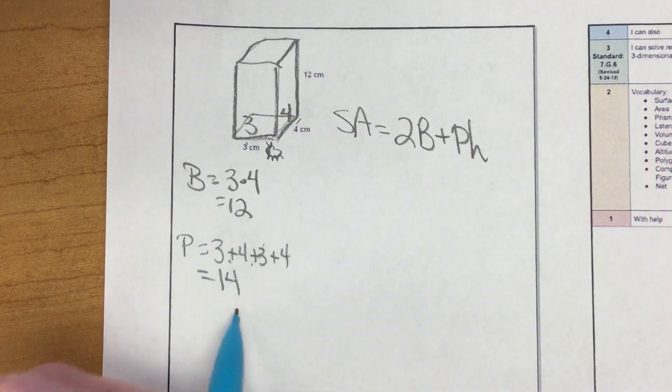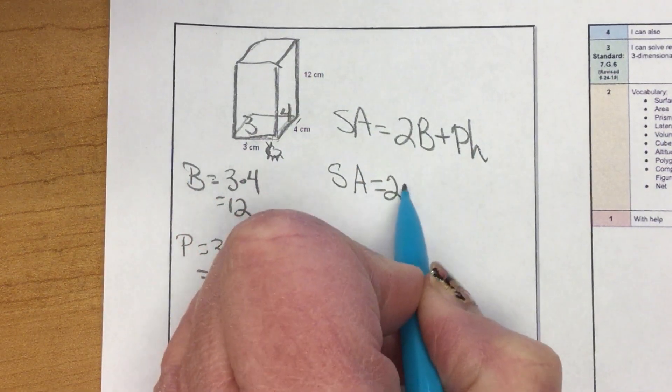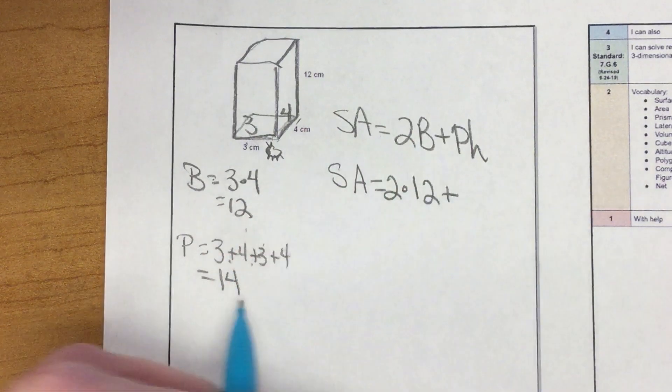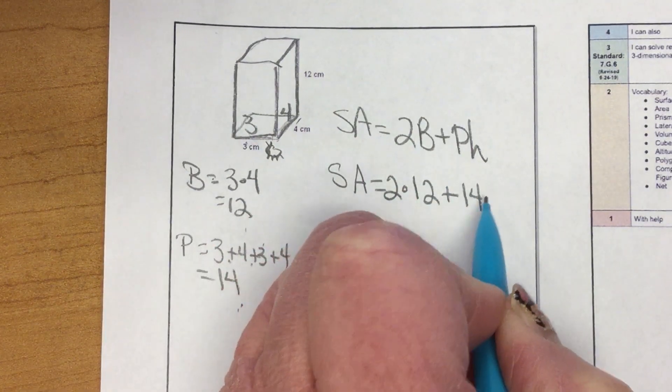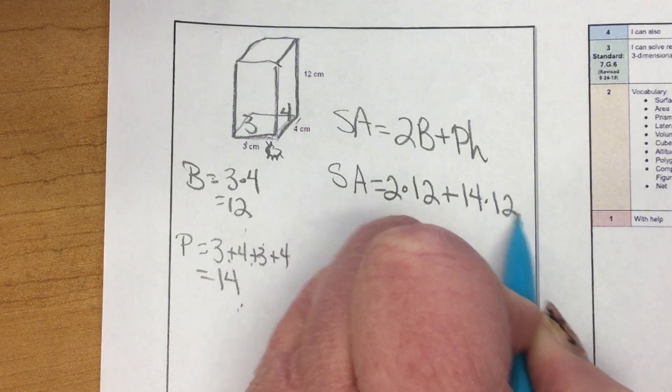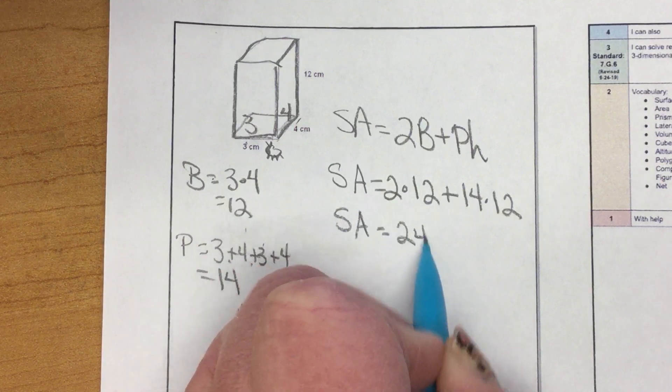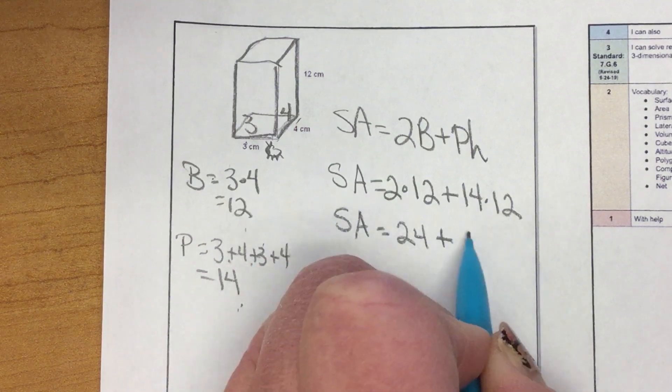We substitute those in. Surface area equals two times 12 plus perimeter, 14, 14 times height of 12. So my surface area is 24 plus 288.